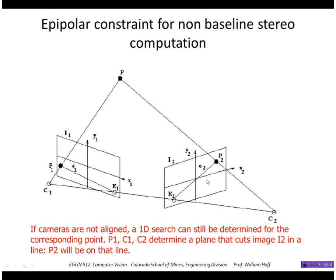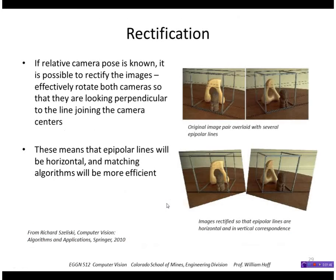You can also do this if the cameras are not aligned. You still have the plane formed by the camera centers and your point in the image, so you can calculate the epipolar line in the other image and search along that. You can design efficient algorithms to search horizontally. If you don't have aligned cameras, it might be better to warp the images so that they are effectively aligned — this shows an example of taking two stereo images that are not aligned and rotating and warping them so that the epipolar lines are parallel.